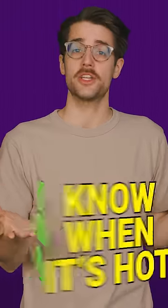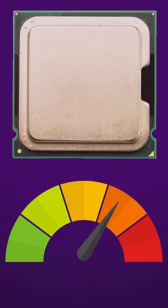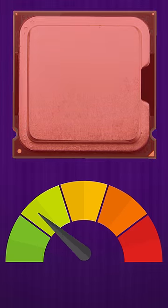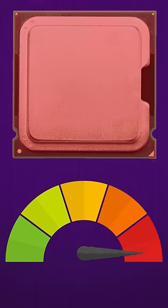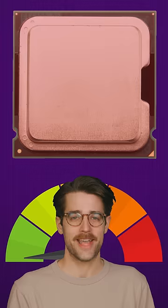But modern CPUs are surprisingly good at knowing when things are getting a bit too toasty. Virtually all current processors have fail safes that will cause the chip to throttle, or slow down, if they're overheating, and if things get way too hot, they'll just force themselves to shut down, physically and emotionally.